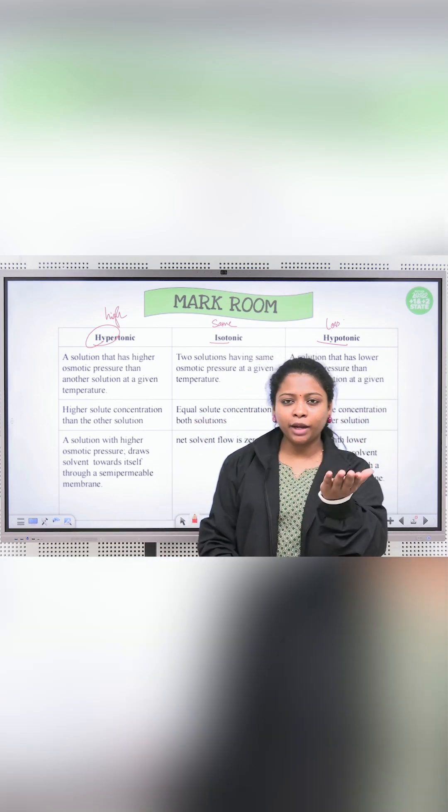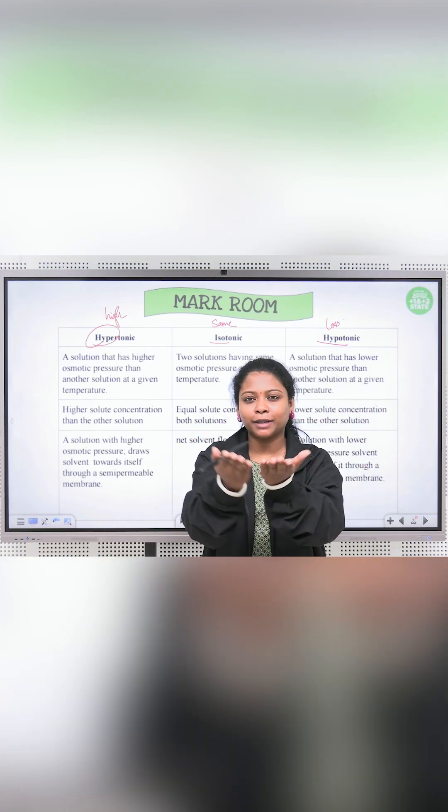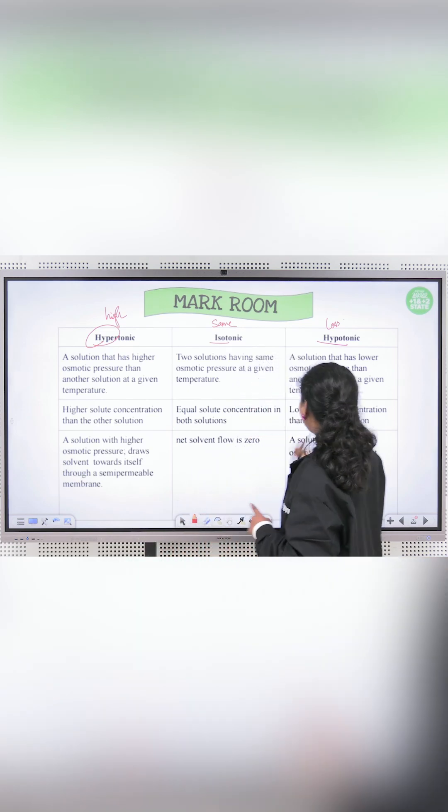What is isotonic? If A's osmotic pressure and B's osmotic pressure are equal, that is isotonic.